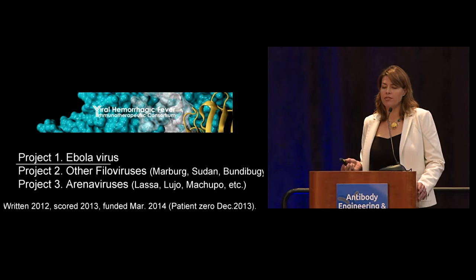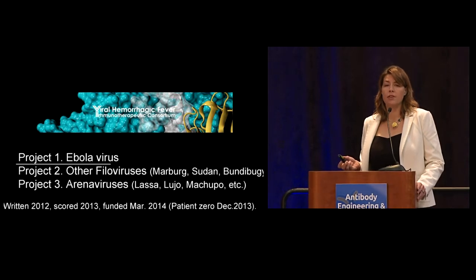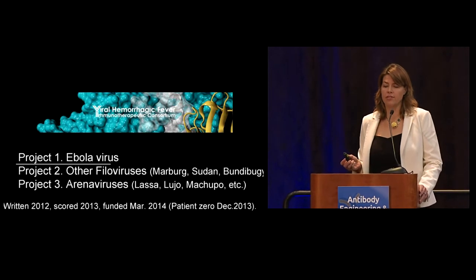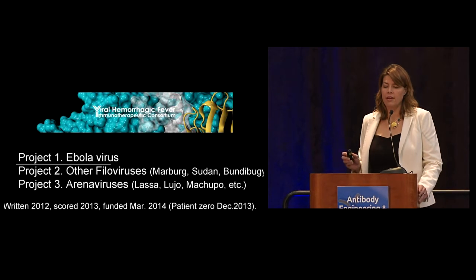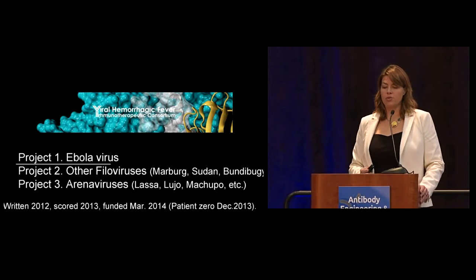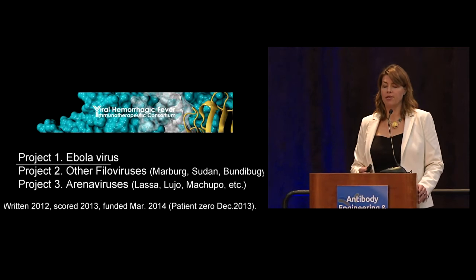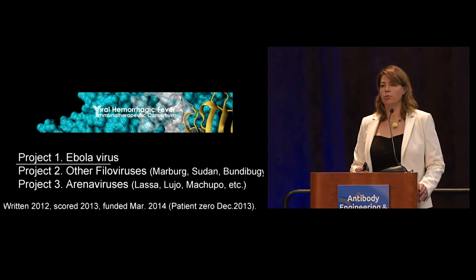We have three different projects: antibodies against Ebola virus, filling in what we're missing for all the other filoviruses, and endemic arena viruses like Lassa virus, Lujo virus, and others in South America. The idea came in 2012, two years before the outbreak. We wrote the grant, scored in 2013, and the money started March 2014. Patient zero — the two-year-old boy in Guéckédou province in Guinea — was infected a couple months earlier, so the outbreak was already going on when this project started.